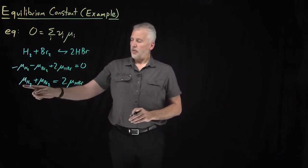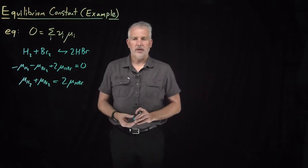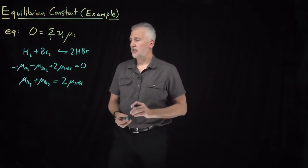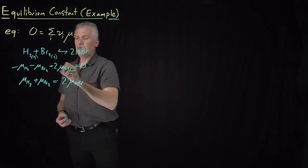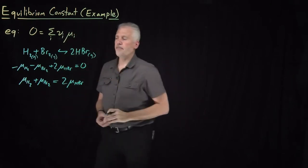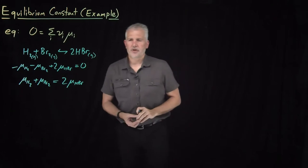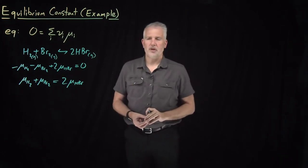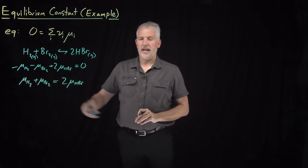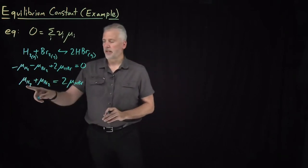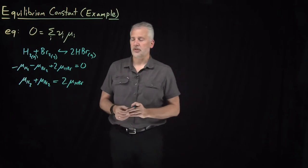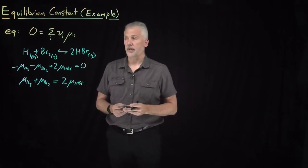Now, what can we do with this? We know a fair amount about chemical potentials. In particular, for this reaction at room temperature, H₂, Br₂, and HBr are all gaseous species. The chemical potential of a gas — we know how to write that down. In particular, we know that chemical potential is going to depend on the pressure of the gas.